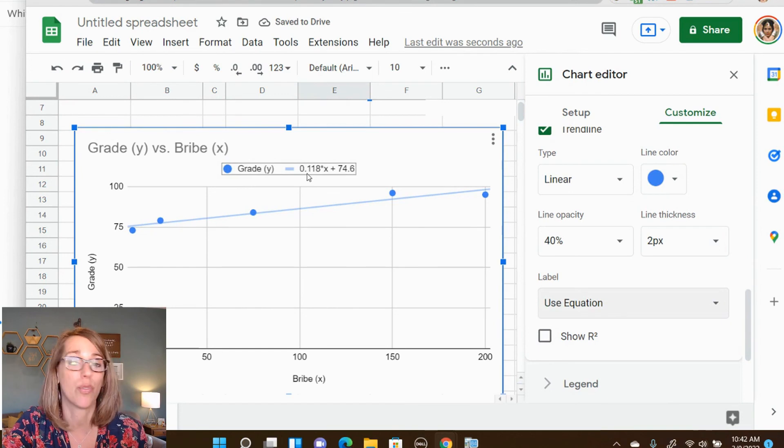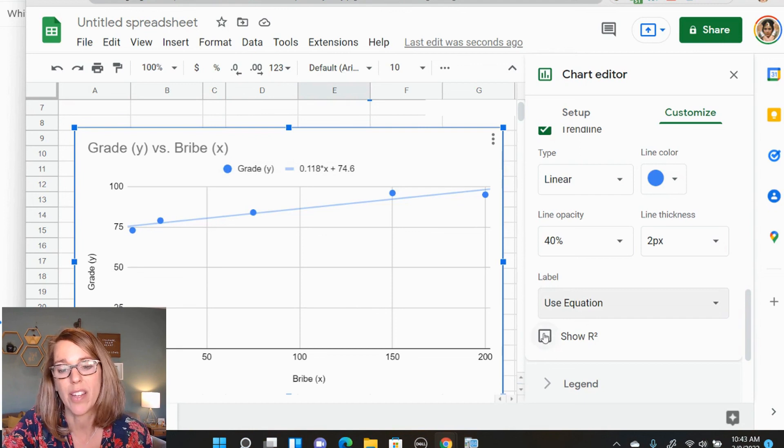So Y is equal to, so the grade is equal to 0.118X plus 74.66. I can also have this show R squared. Remember we had computed R, the correlation coefficient.